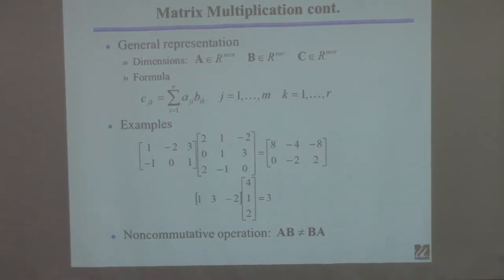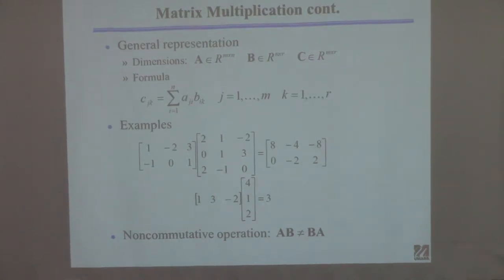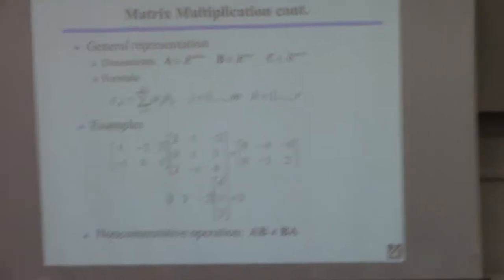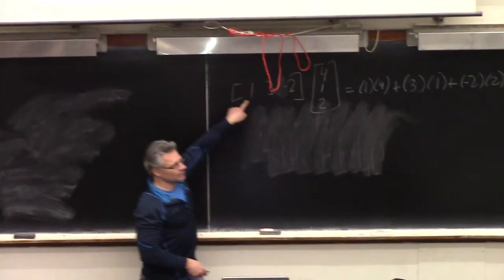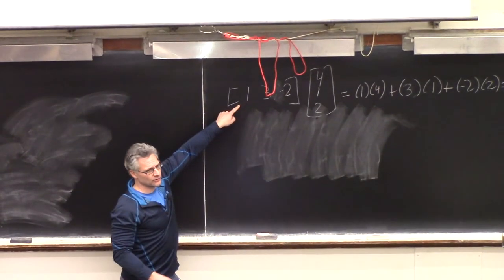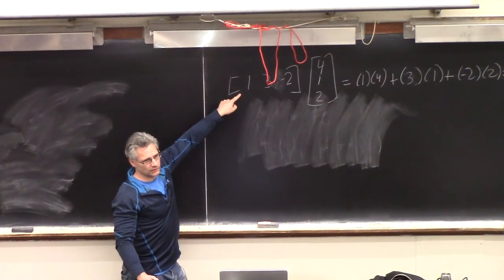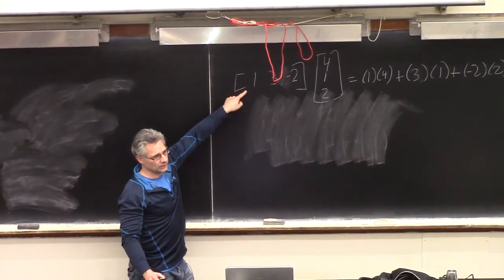You can't take a column vector and multiply it times a row vector. If you were to switch these two around and try to have the column on the left-hand side and the row on the right-hand side, the dimensions don't make any sense — it's not defined.